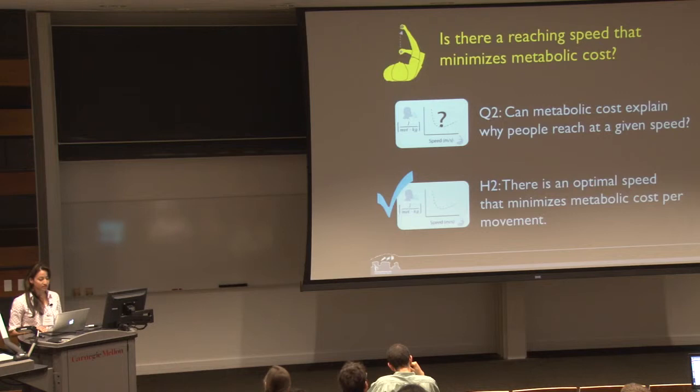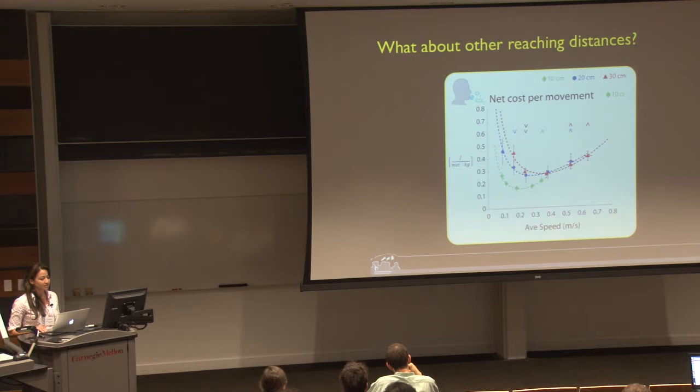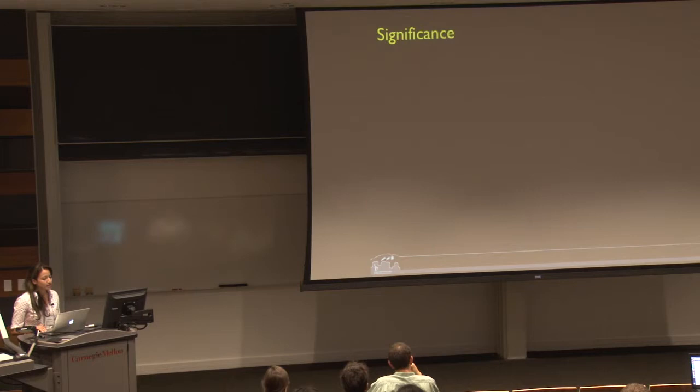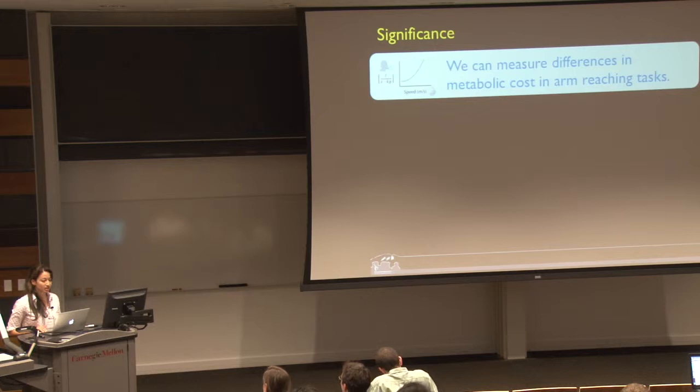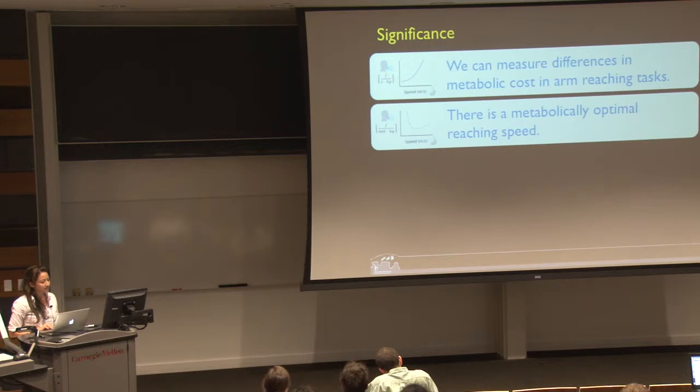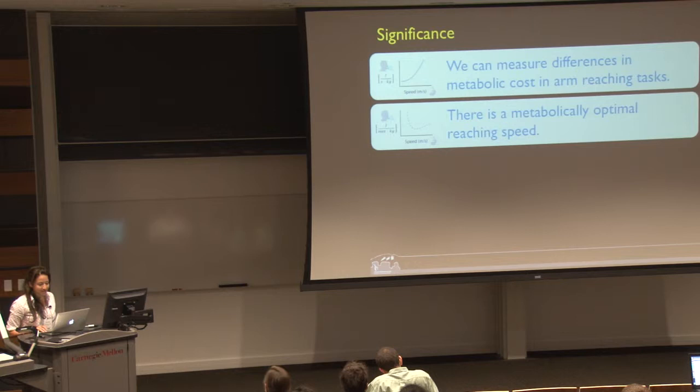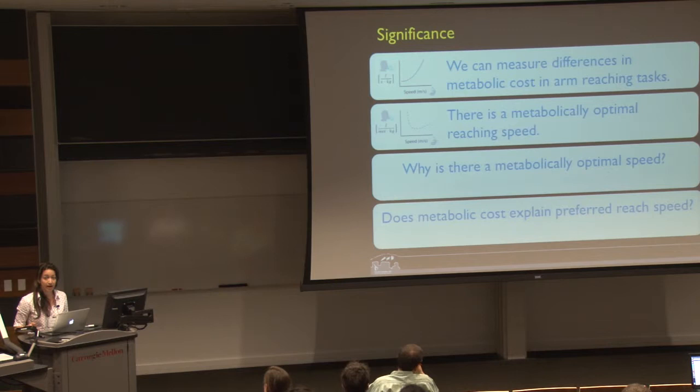The significance: first, we've demonstrated that we can measure small differences in metabolic cost in controlled reaching tasks, opening the door for precise and focused studies that improve our understanding of the cost and constraints underlying movement decisions. Secondly, we found that there is a metabolically optimal reaching speed, which suggests that current representations of effort in computational models may need to be revised. There are two remaining questions — why is there a metabolically optimal speed and how can we model this, and does metabolic cost actually explain preferred reaching speed? Come see the poster.